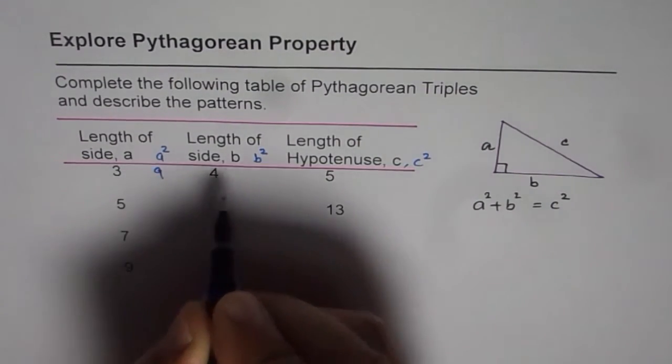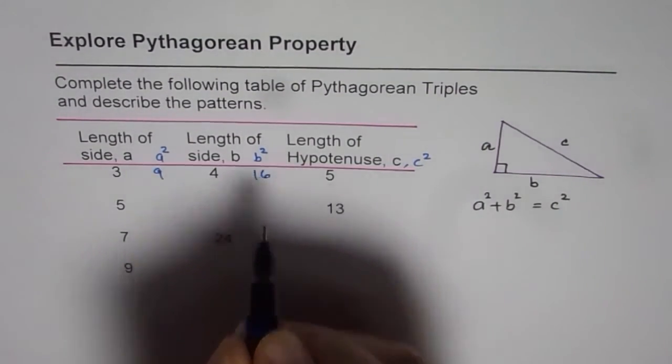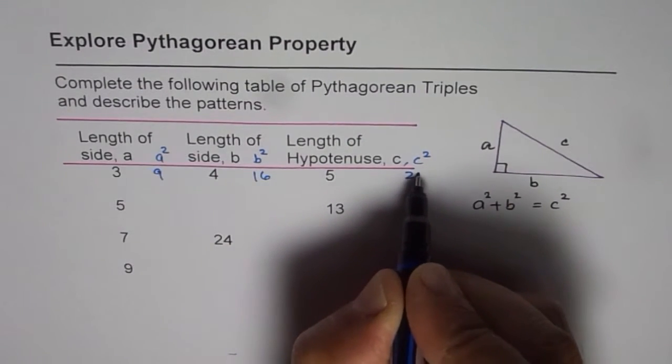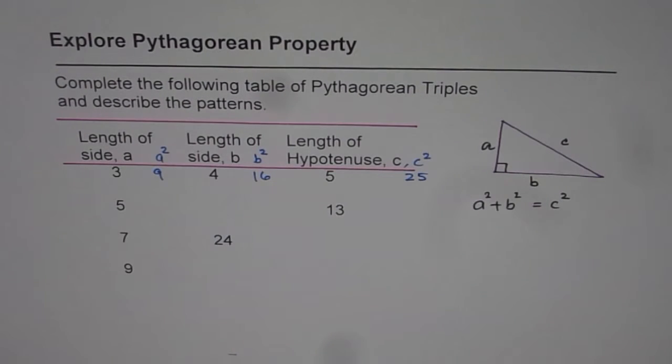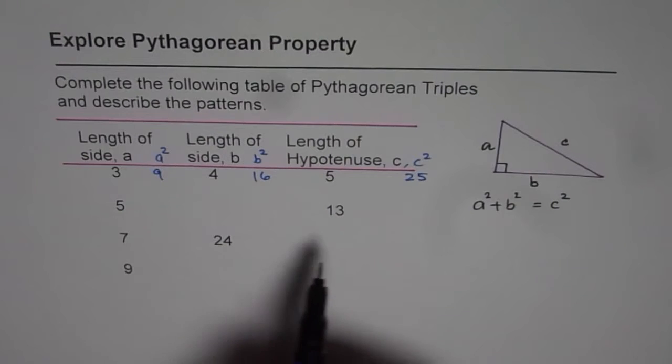So 3 square is 9, 4 square is 16 and c square is 25. Sum of these two is the square of c. Right? Now we will try to fill up this table.